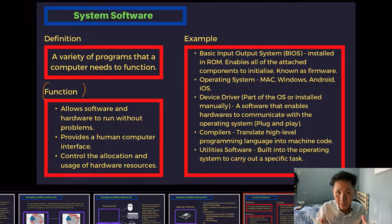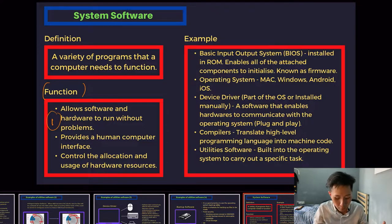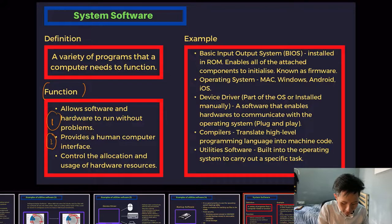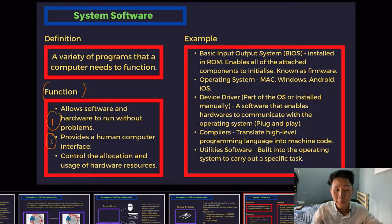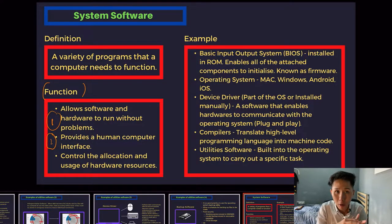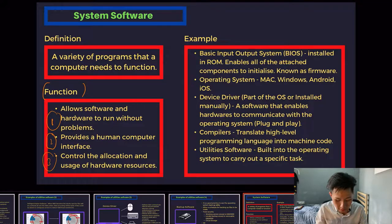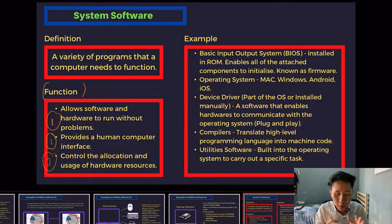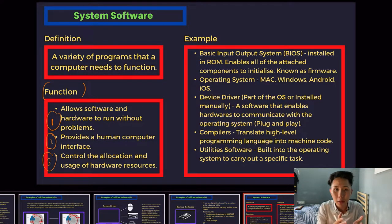The functions of system software are: first, they allow software and hardware to run without problems, which is done by the device driver; and they provide a human-computer interface, done by the operating system. The OS provides a way for us to communicate with the computer, whether via touch screen, mouse, or keyboard. Third, it controls the allocation and usage of hardware resources. These are all the system software needed for a computer to function.